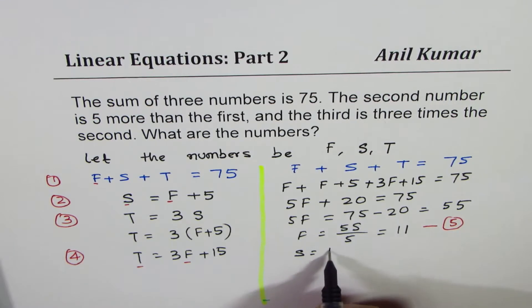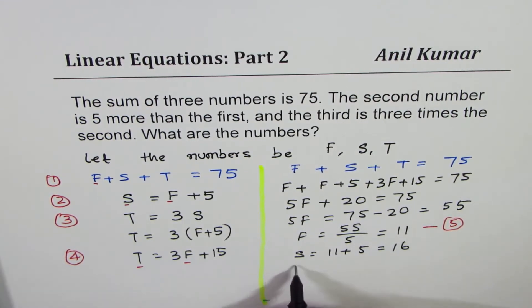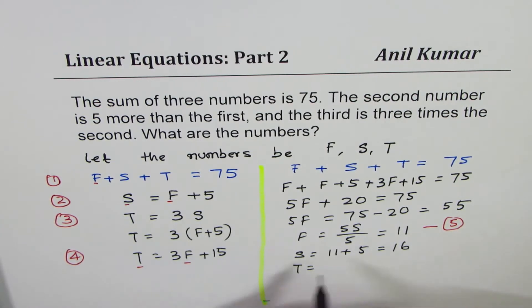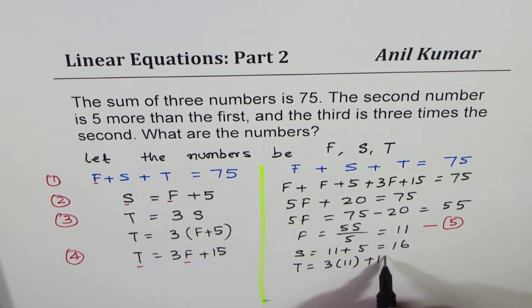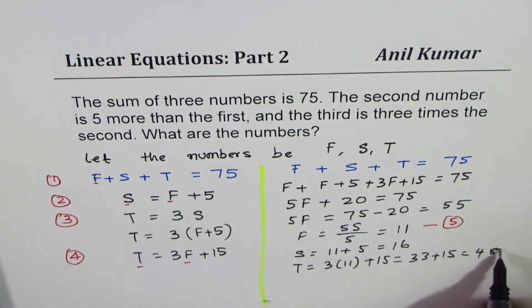We can find all other values. Substitute this 11 in equation 2, so we get S = 11 + 5 = 16. And T = 3 times 11 plus 15, which is 33 + 15.